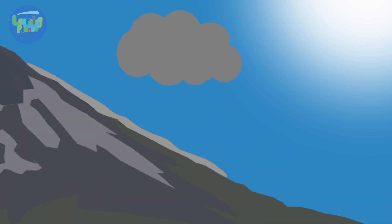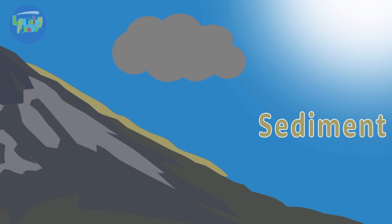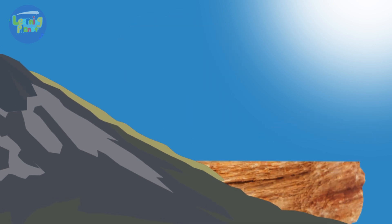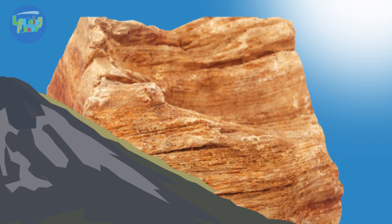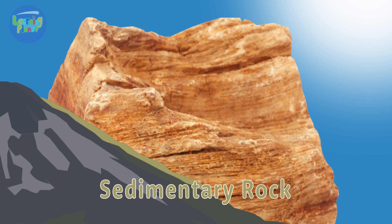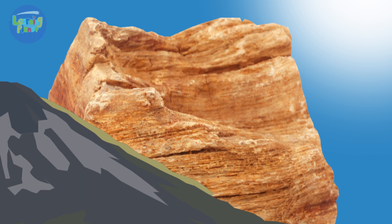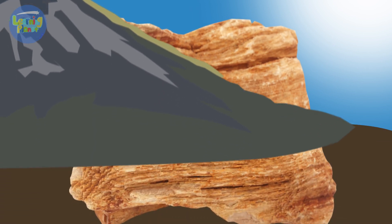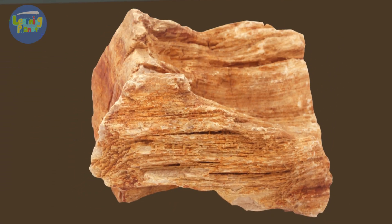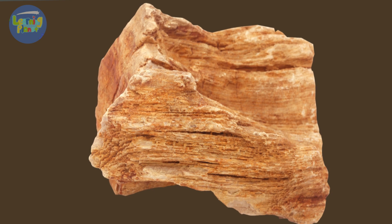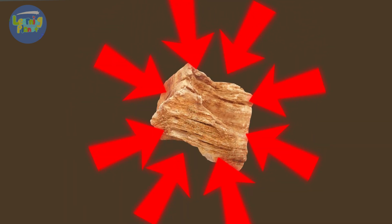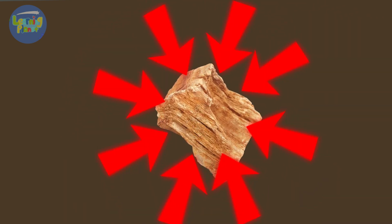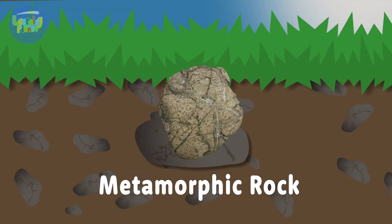That's called igneous rock. As weathering occurs, the rock can become a sediment and build up over time into a sedimentary rock. If the land changes over time and the sedimentary rock goes down, even greater pressure can happen to the rock, and this forms a metamorphic rock.